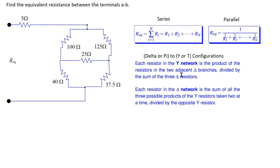We are interested in replacing the upper delta of resistors with a Y. We can draw the Y resistors and give them labels R1, R2, and R3. In order to find the value of these three Y resistors, the rule to remember is: each resistor in the Y network is the product of the resistors in the two adjacent delta branches divided by the sum of the three delta resistors.